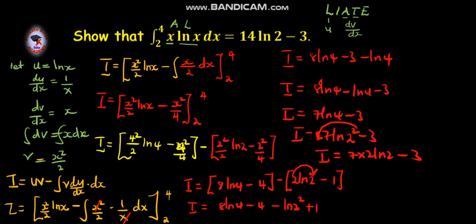Are we together, students? Yes. So, I will be equal to, what is 7 times 2, that is 14, 14 ln 2, then minus 3. So, we are going to say that proved as required.